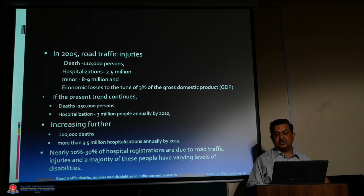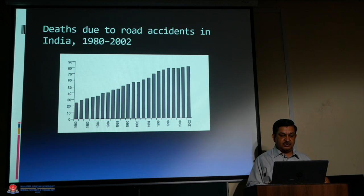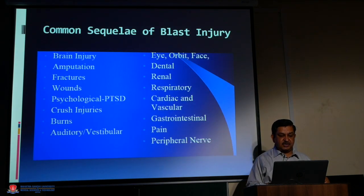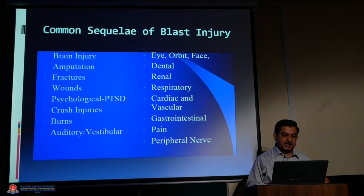The majority of road traffic injury survivors have varying levels of disabilities. Common sequelae of injuries include brain injury, amputations, fractures, wounds, and psychological effects. Blast injuries cause burns, auditory and vestibular damage, eye and orbit injuries, facial and dental injuries, renal, respiratory, cardiac, vascular, gastrointestinal, and peripheral nerve damage.